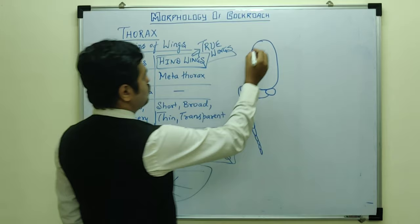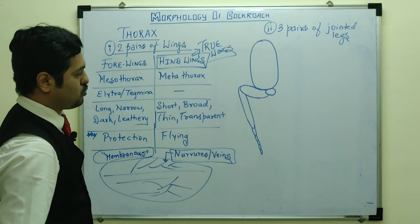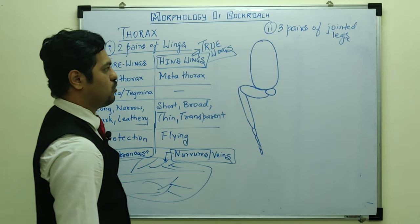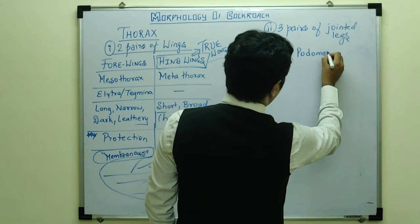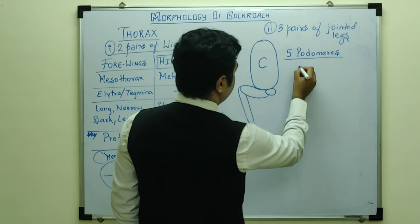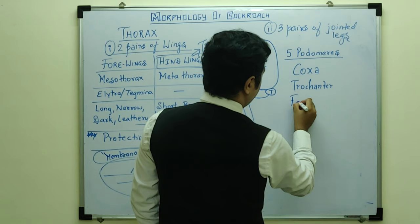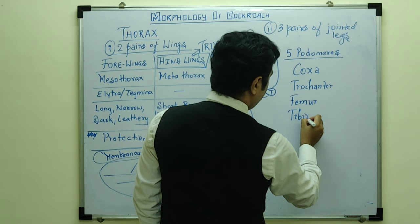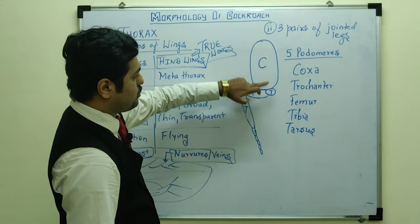The second structure in the thorax is the three pairs of jointed legs. Because of many joints, they are jointed legs. They arise from all three thoracic segments — prothoracic, mesothoracic, and metathoracic. Each leg consists of five podomeres. The five podomeres are: coxa, trochanter, femur, tibia, and tarsus.